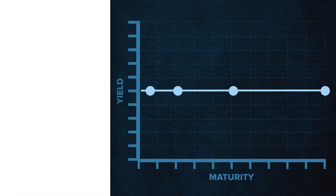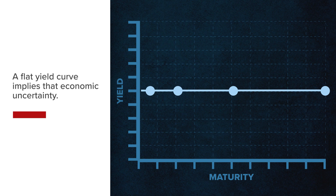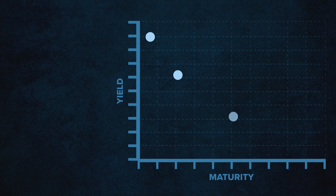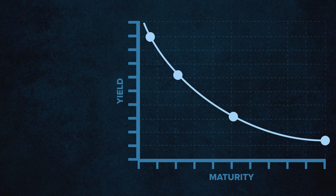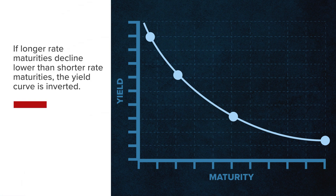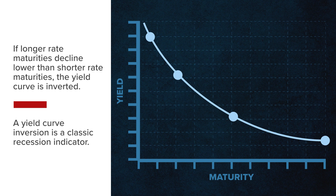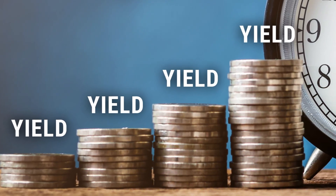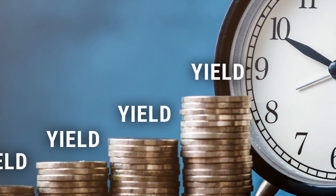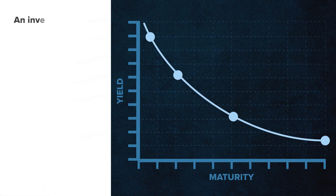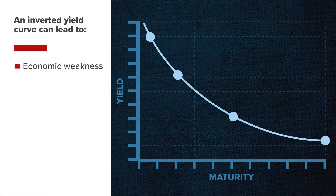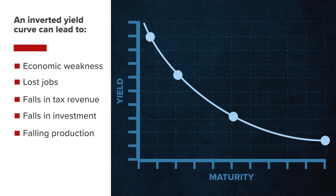A flat yield curve that has similar yields across all maturities implies that there is economic uncertainty on the horizon. Should longer rate maturities decline such that they are lower than shorter rate maturities, the yield curve is said to have inverted. A yield curve inversion is a classic recession indicator that can predict contractions in economic activity. The natural forces of lending suggest that markets are in balance when lenders receive more yield for more duration. An inverted yield curve signals market imbalances that will likely lead to economic weakness, lost jobs, falls in tax revenue, falls in investment, and falling production.